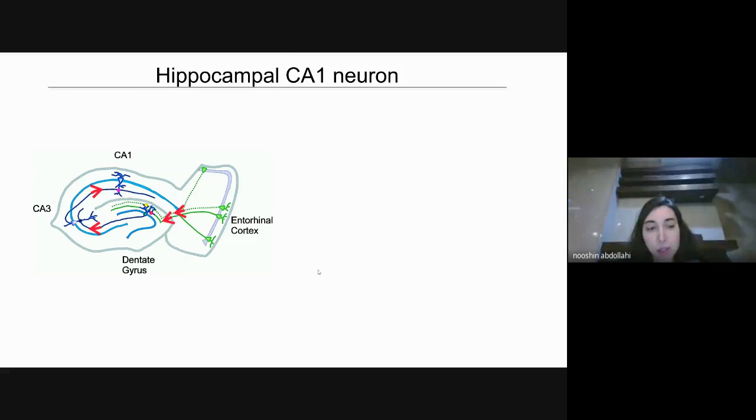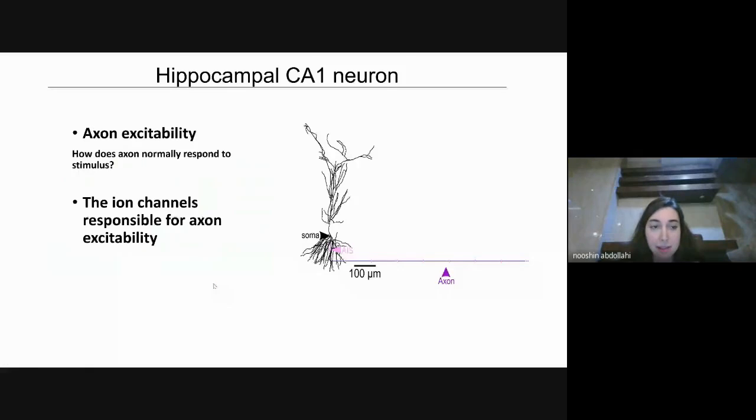My research was focused on a single CA1 neuron in the hippocampus, specifically its axon. I built a CA1 neuron with a long myelinated axon to study axon excitability. The general question is, how does axon normally respond to stimulus? And as the next step, we wanted to identify the ion channels responsible for axon excitability. Since the main focus of the research is excitability, I will talk more about excitability.